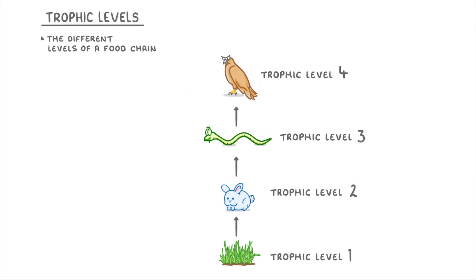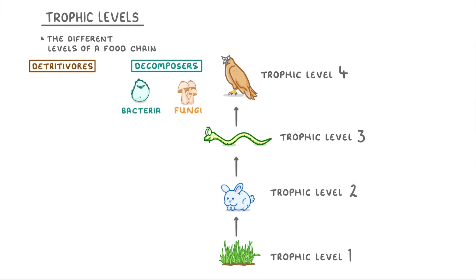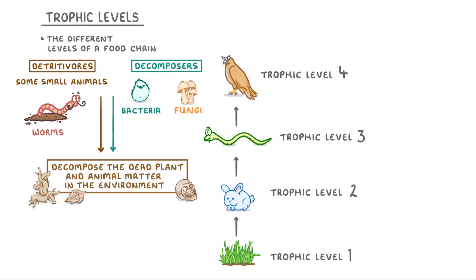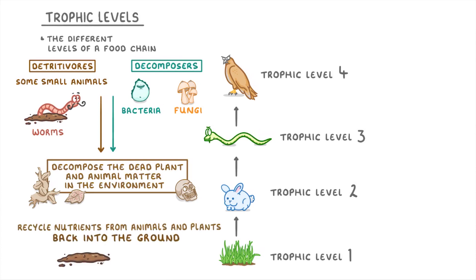The other groups we need to mention are decomposers and detritivores. These are organisms like bacteria, fungi, and some small animals like worms. What they all have in common is that they help to decompose dead plant and animal matter in the environment, allowing them to recycle nutrients from animals and plants back into the ground, which can then be used again by producers.